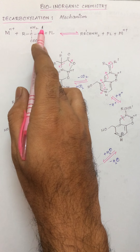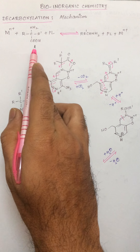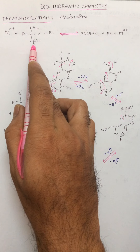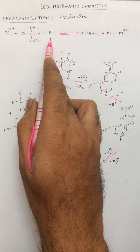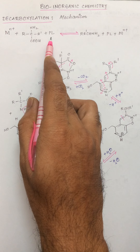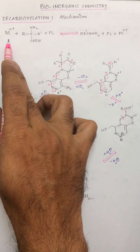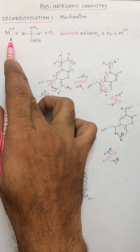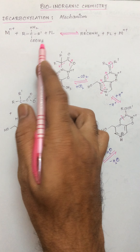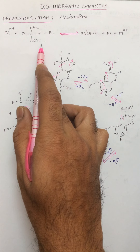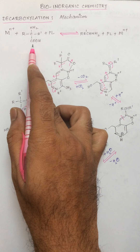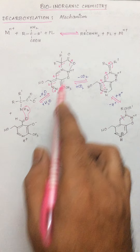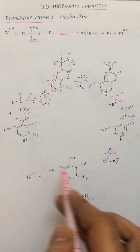Decarboxylation involves the removal of a carbon dioxide group from an amino acid. The amino acid reacts in the presence of one of the basic forms of pyridoxal. It may react in the presence of a metal ion, or it may also react in the absence of a metal ion, but with a varied degree of reaction rates. Once carbon dioxide is removed, the amino acid is converted into an amine.